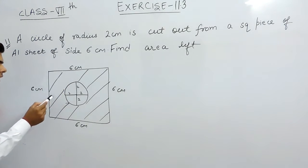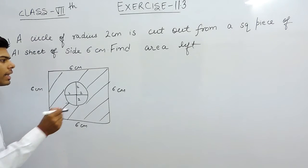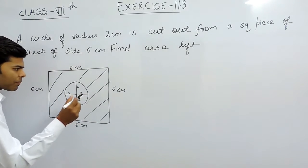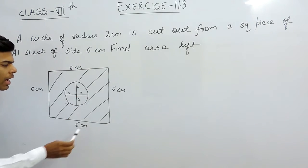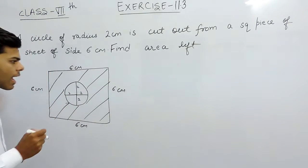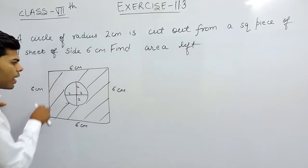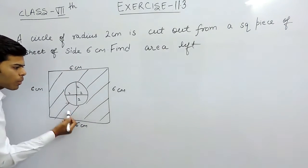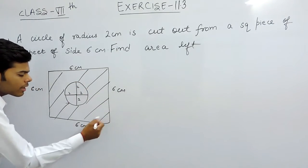That simply means we have to find the area of this shaded portion. What we will do is, first of all, we will find the area of this complete square - this will include all of this, including this circle. After that, we will find the area of this circle and then we will subtract the area of this circle from this square. So from this complete square, this portion will be subtracted and we will get the remaining portion.